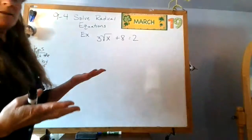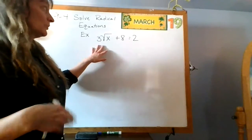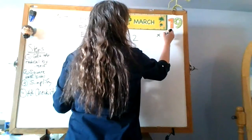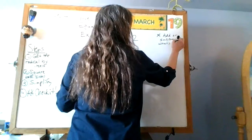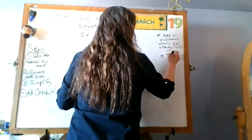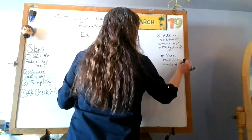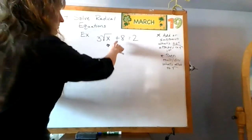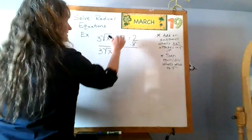This is very similar to what we did before — we have something on the outside and also something multiplying. Think back: if you had three x plus eight equals two, what do you always do first? Add or subtract what's not attached first, then multiply or divide what's attached. So here, plus eight is not attached to the square root — subtract eight from both sides.